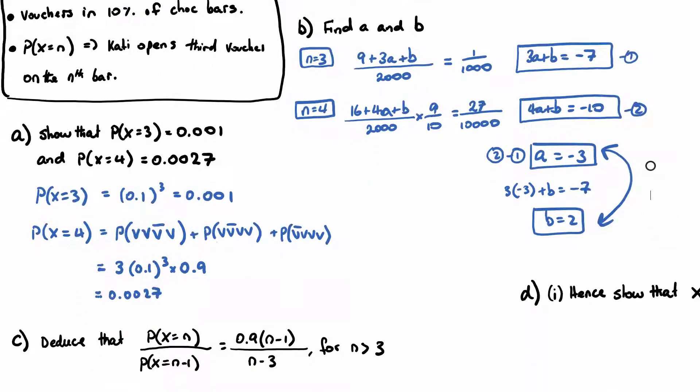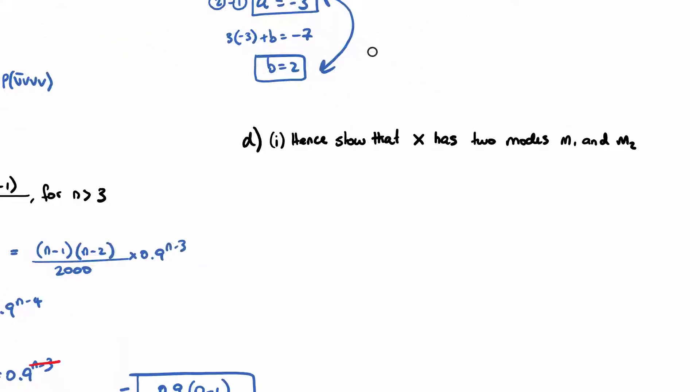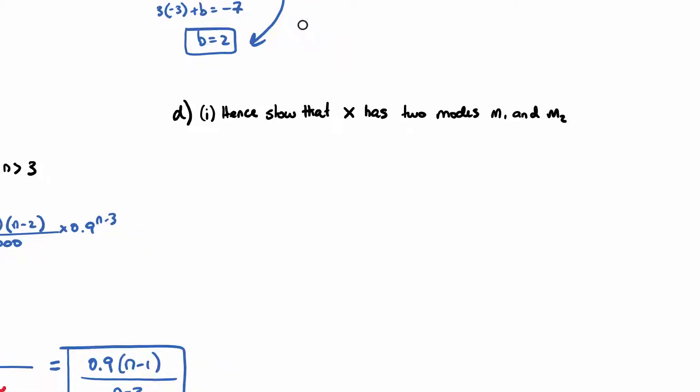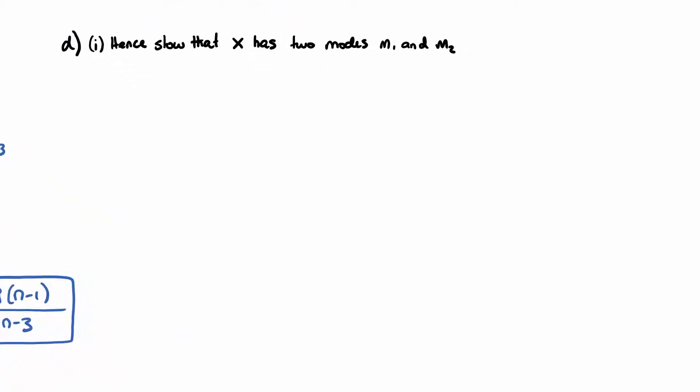Part D. So all of the working for parts A, B and C are here. Now for part D it says hence, so we want to use what we just found, show that X has two modes, M1 and M2.